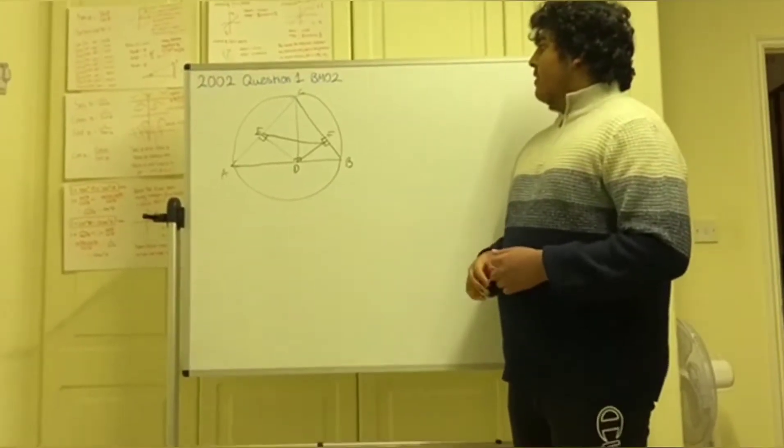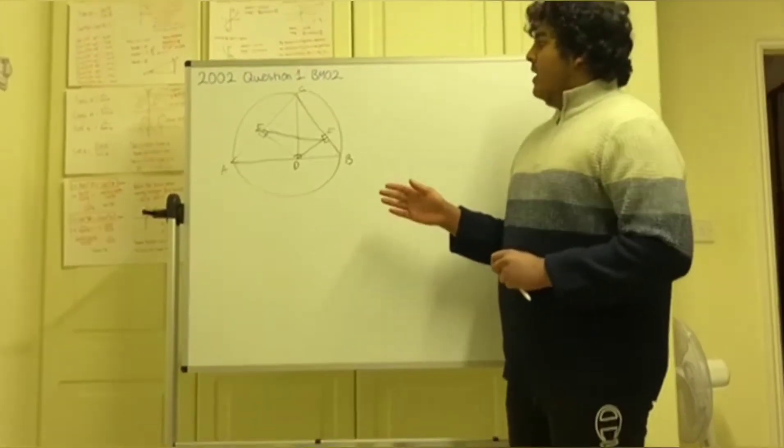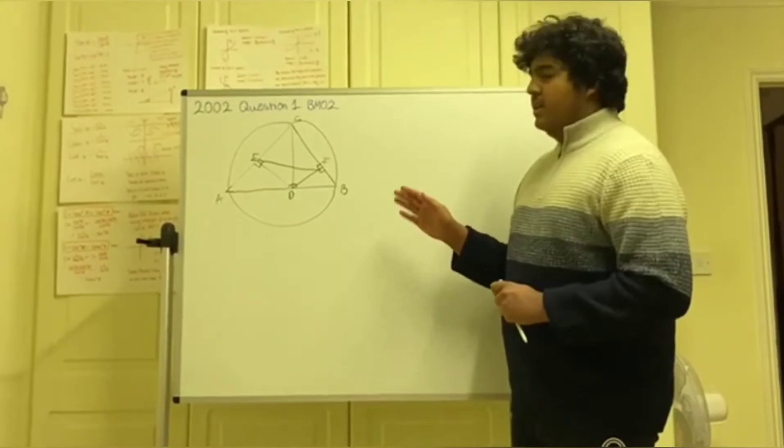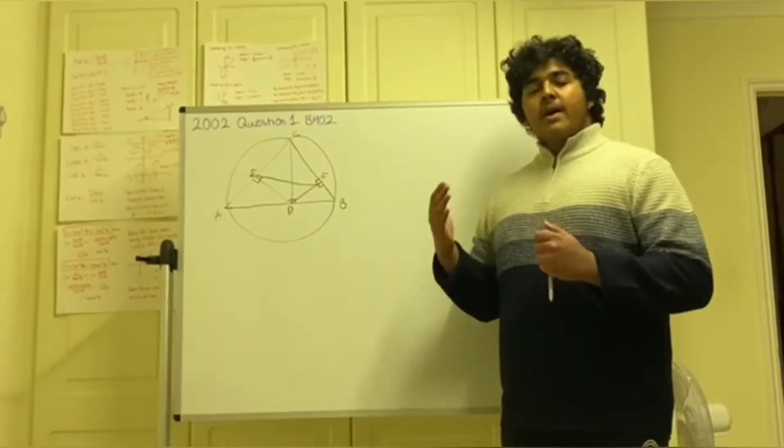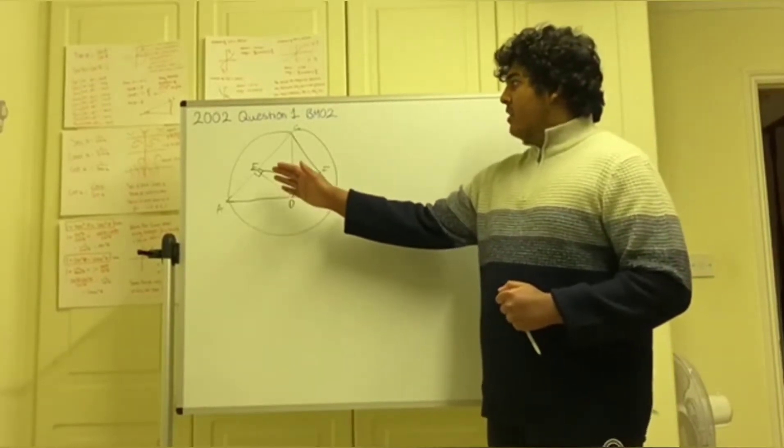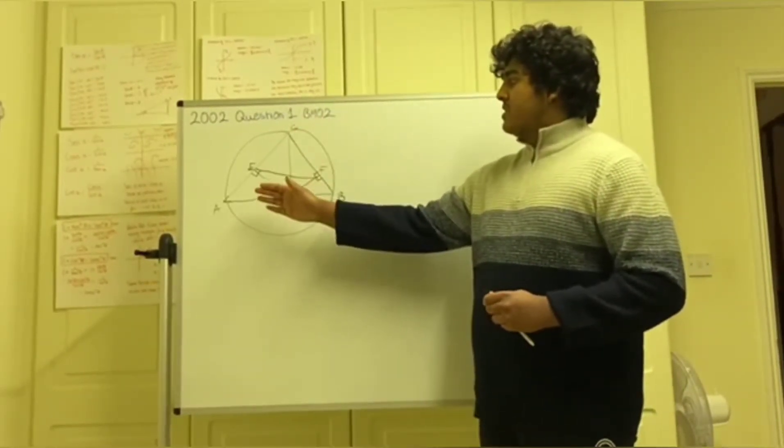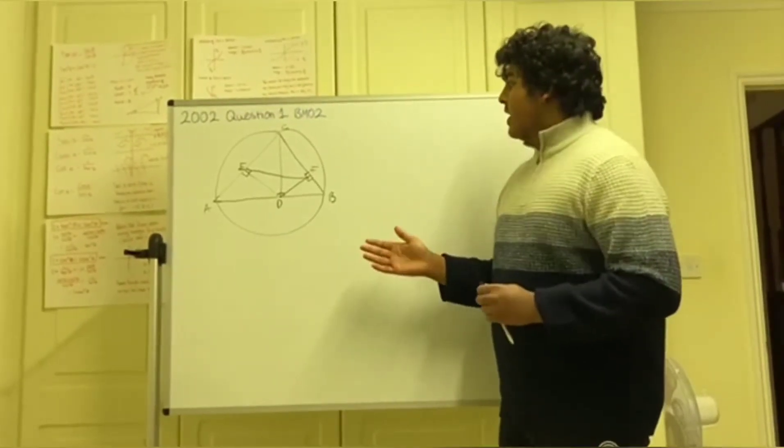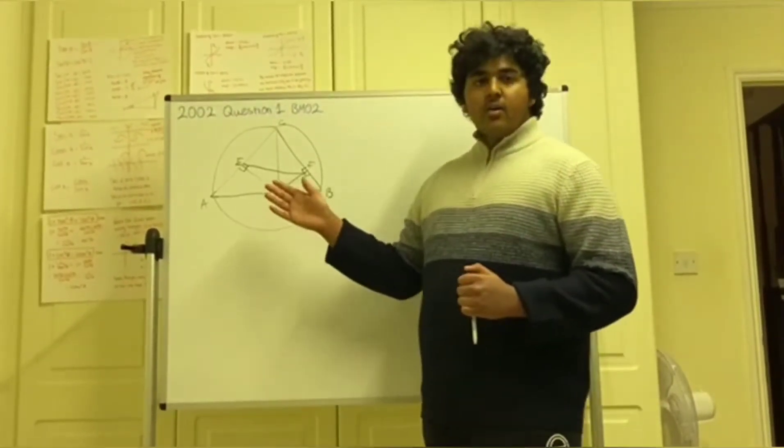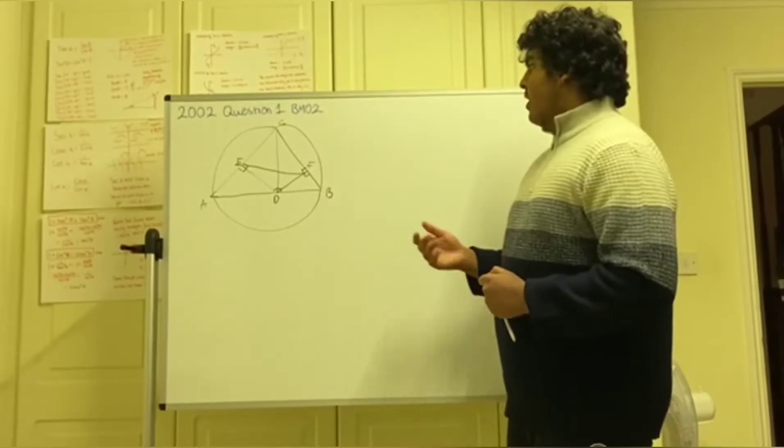So now that we have the circumcircle drawn, it's really a question about how do we get EF in terms of something which won't be dependent on which direction the actual vertices are placed. The only way to do this really would be to focus on the angles.